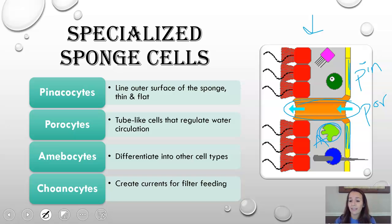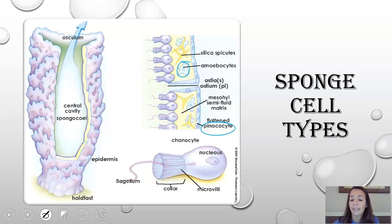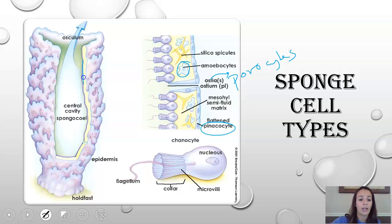Your choanocytes are also referred to as collar cells. Those red structures with the single little tail are your choanocytes. The amoebocytes and pinacocytes are visible in this other diagram view as well — the pinacocytes are flattened. Ostia is the term for the openings themselves, but they're made from porocytes. The choanocytes line the entire inside, and those little tails move the water — they pull the food and the water gets pumped out the osculum.